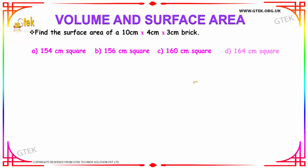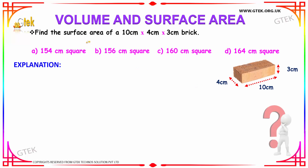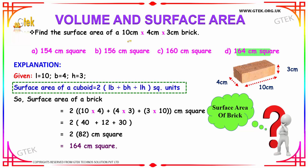Moving on to our first example, we are going to find the surface area of a brick that has the following dimensions. It has the length to be 10 cm, breadth to be 4 cm and height to be 3 cm. That is length of your brick is 10, breadth is 4 and height is 3.